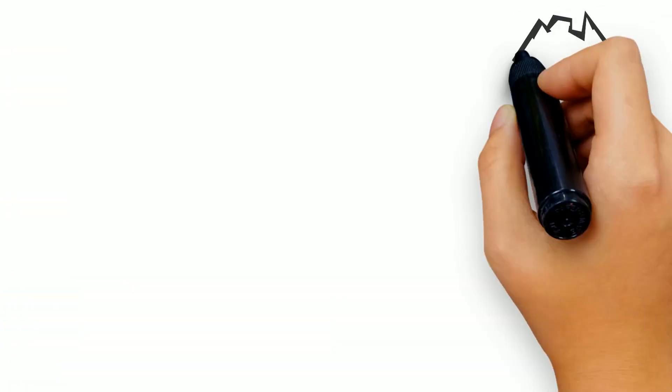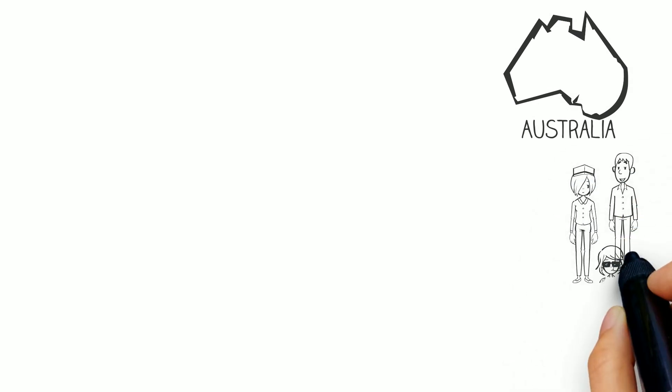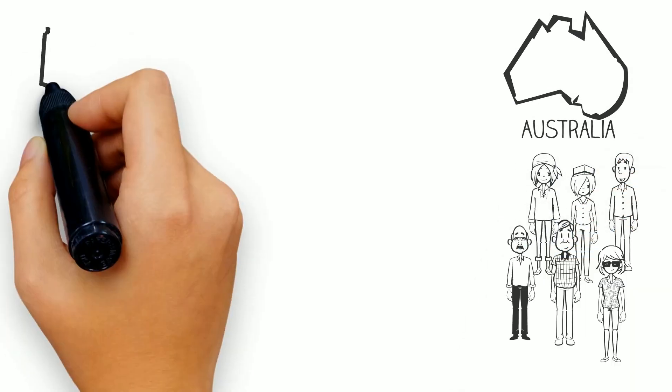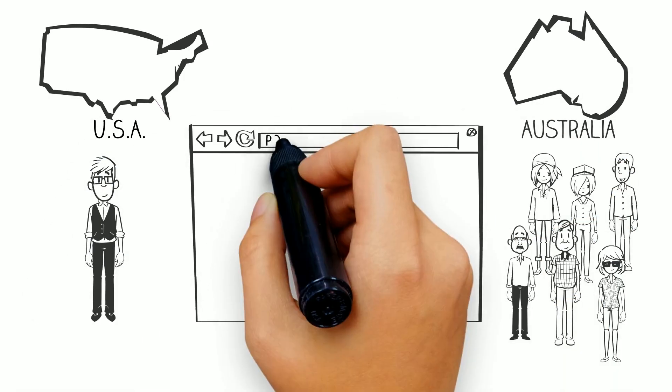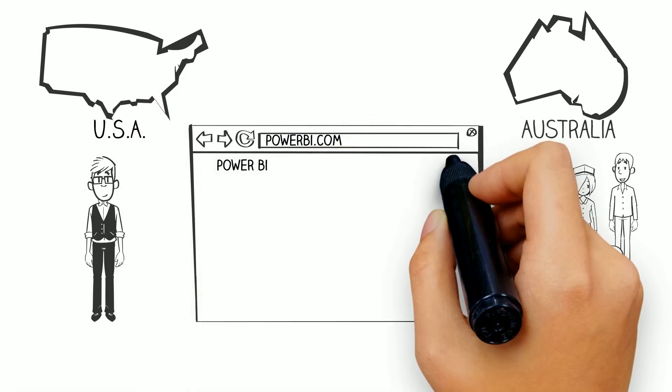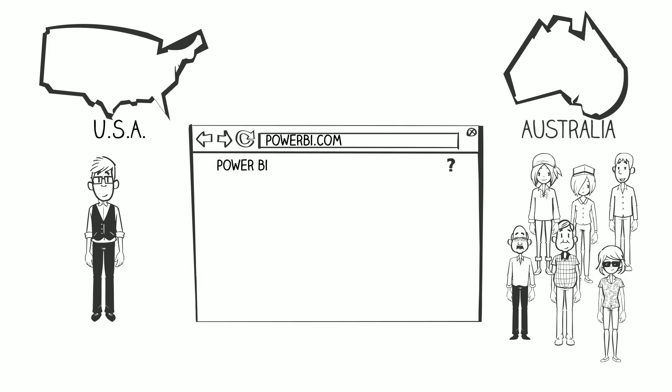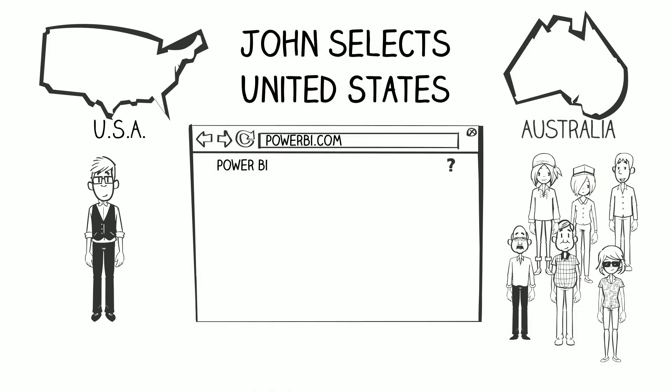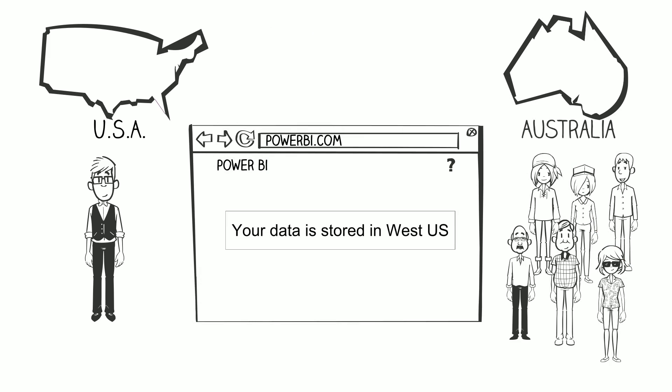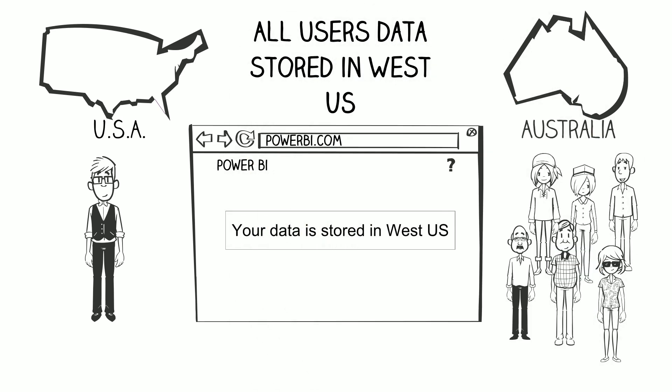Let's look at this a different way. Let's say that the majority of your users are in Australia, but you have one user that works remotely in the United States — John, again. John goes and signs up for Power BI. He's the first one in your organization to do it, and he selects that he's in the United States. When he goes into Power BI, he's going to see that his data is stored in the United States. And every other user in your organization — they're all located in Australia — all their data now is stored in the United States.